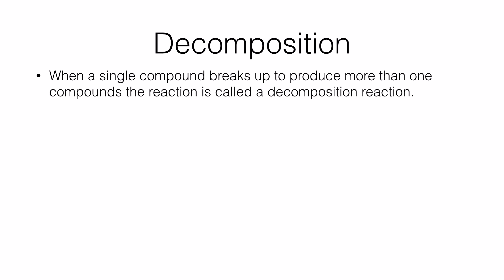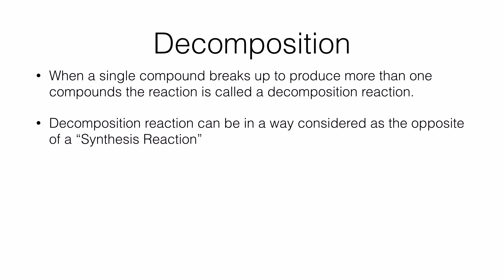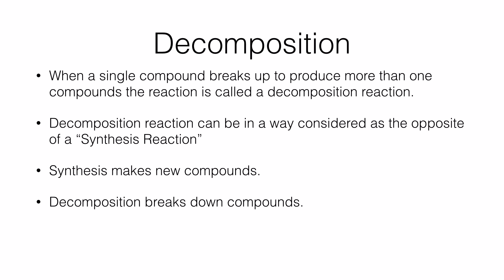The next type of reaction we're going to look at is called decomposition reaction. As the name indicates, we're going to break something up — we're going to decompose the molecule. So every time you look at a reaction, if there is only a single reactant, it indicates that it could possibly be a decomposition reaction. Or we can say, when a single compound breaks up to produce more than one compound, the reaction is called a decomposition reaction. Decomposition reactions can be considered as the opposite of synthesis reaction — synthesis makes a new compound, and decomposition breaks down compounds. For that reason, they are considered complementary to each other.